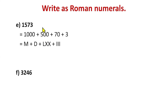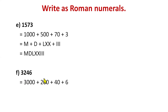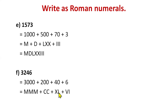Now 3246. Decompose: 3000 + 200 + 40 + 6. 3000 is MMM, 200 is CC, 40 takes help from 50: XL, and 6 is VI. Combine: 3246 is MMMCCXLVI.